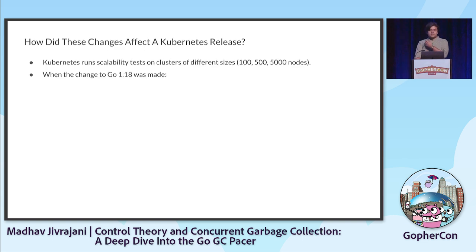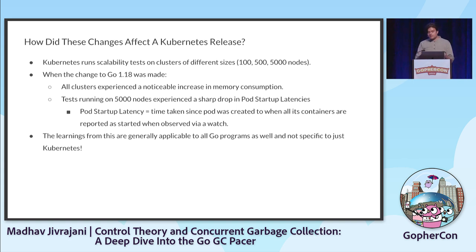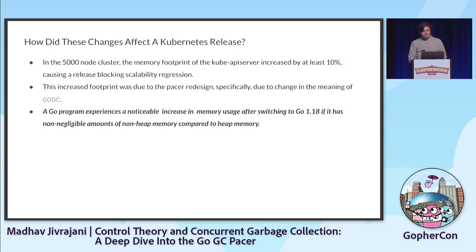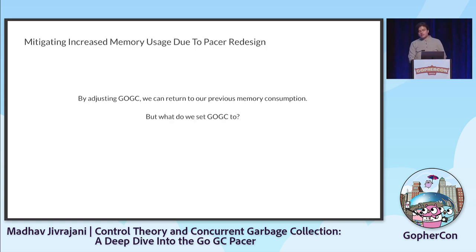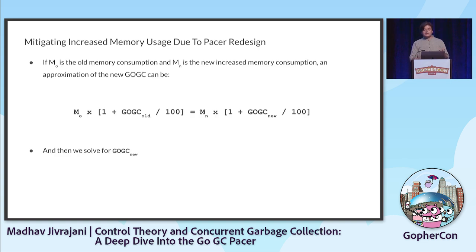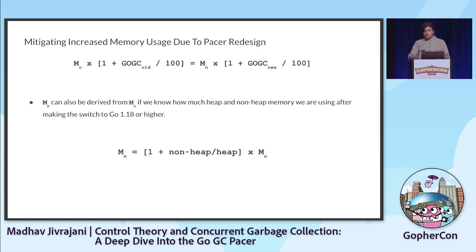How did these changes affect the Kubernetes release? Running scalability tests on different cluster sizes, each cluster experienced a significant memory increase due to the redefinition of GOGC. A Go program experiences a noticeable memory usage increase after switching to 1.18 if it has non-negligible non-heap memory compared to heap memory. The solution is to tune GOGC: equate the old heap goal to the new heap goal and solve for the new GOGC value. If MO is the old and MN is the new, we can derive MN from MO.